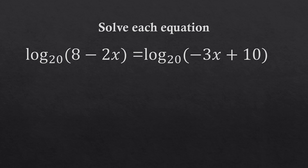The next example is log of 8 minus 2x to the base of 20, equal to log of negative 3x plus 10 to the base of 20. Since we have a single logarithm on each side with the same base, all we have to do is equate the arguments: 8 minus 2x equals negative 3x plus 10. Then we combine like terms.